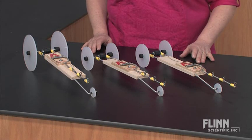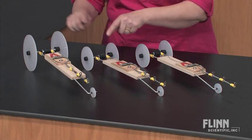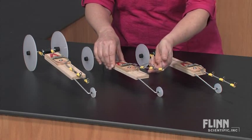Students plan and carry out investigations to test three different variables: wheel diameter, hub diameter, and length of the lever arm.